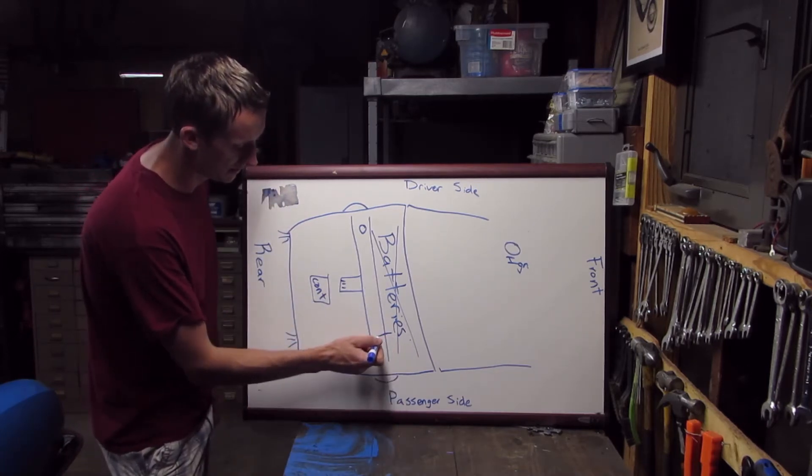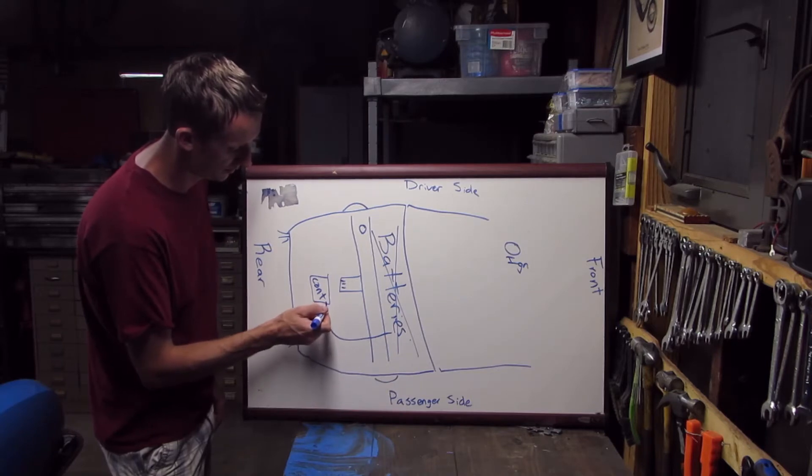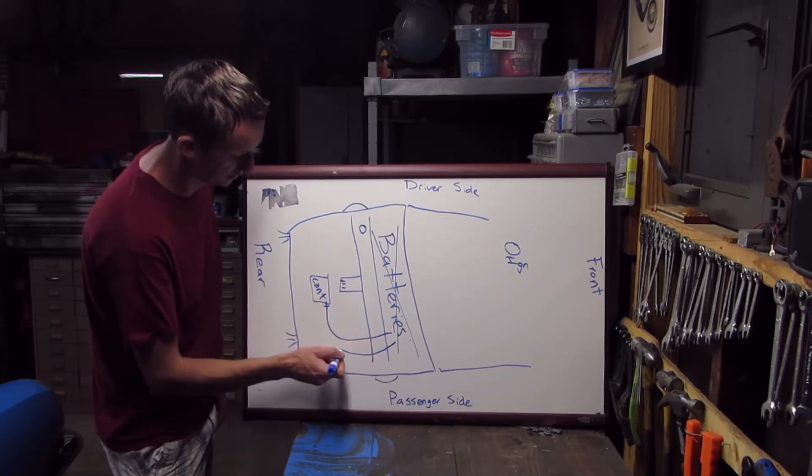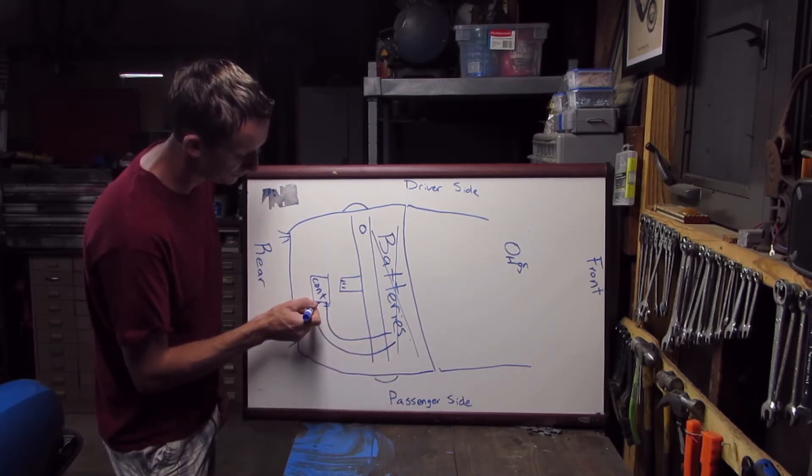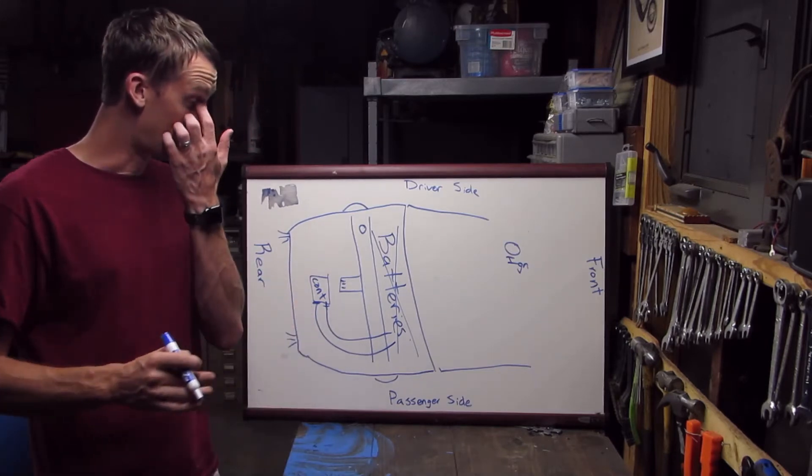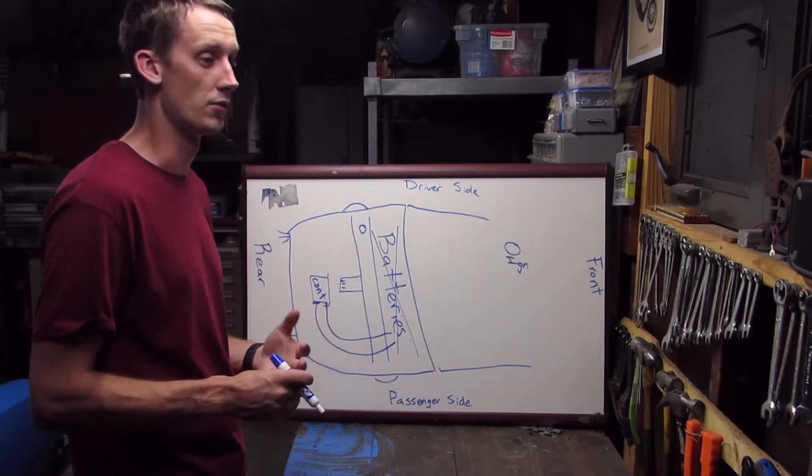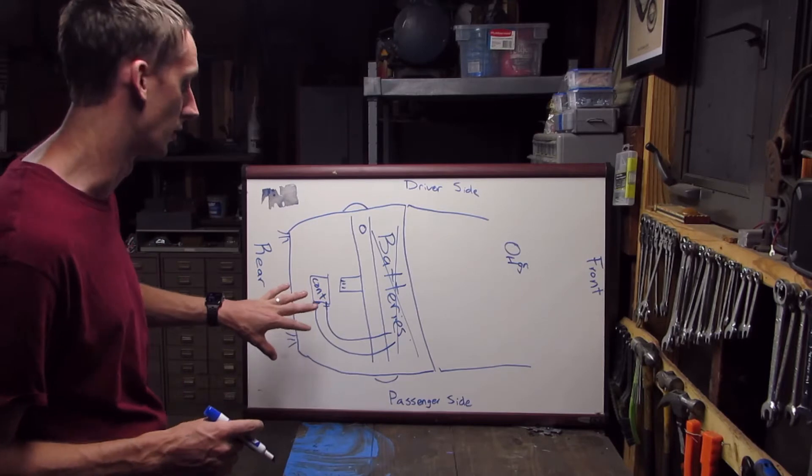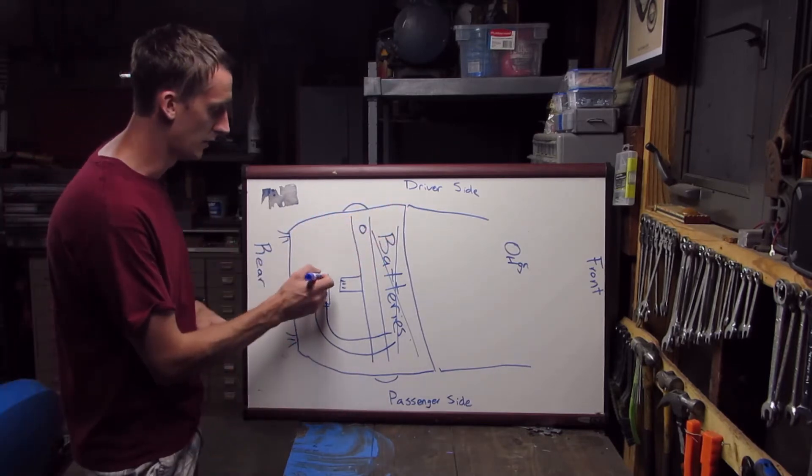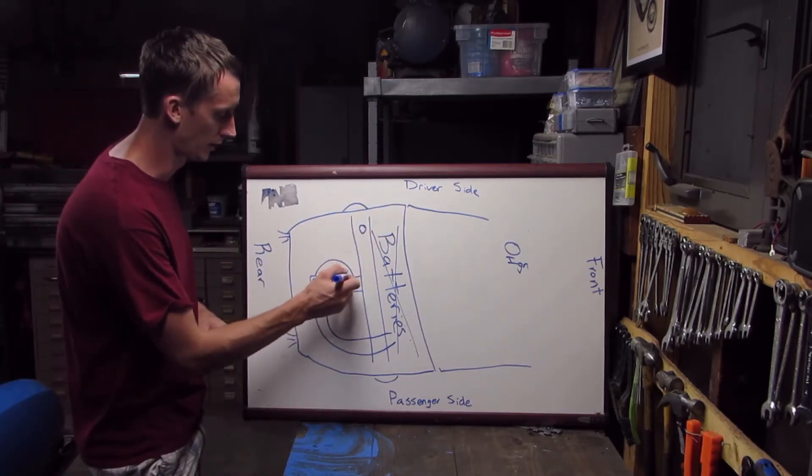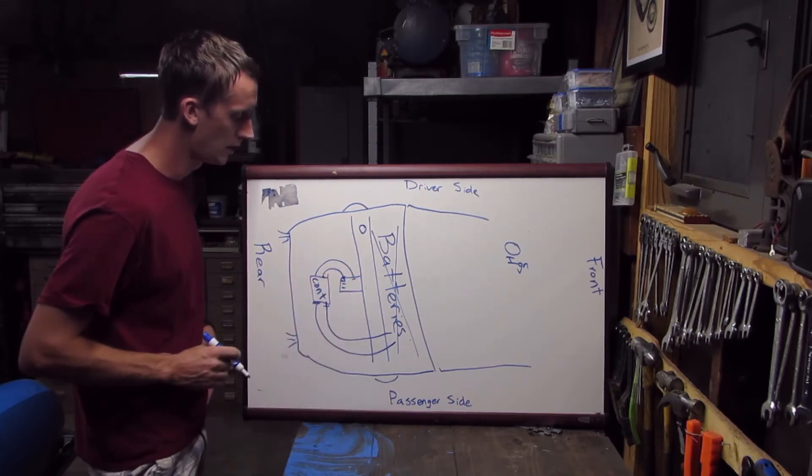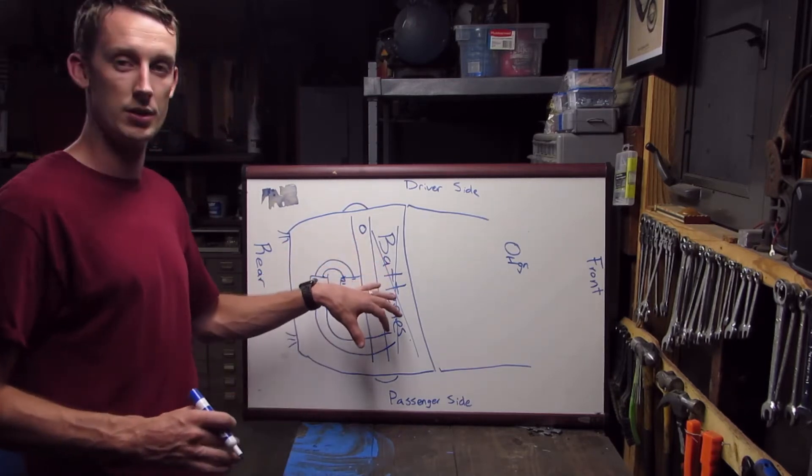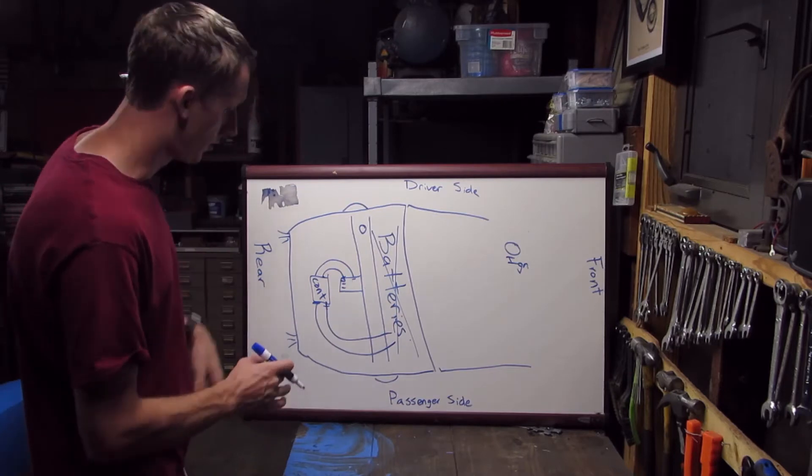So if we have the controller here, the batteries have two cables, positive and negative, and those will come through the body here to a positive and to a negative. Now what you also need to have on here is a way to start this connection and then we'll go out here positive and negative, and those are going to the motor. That's what controls the motor.